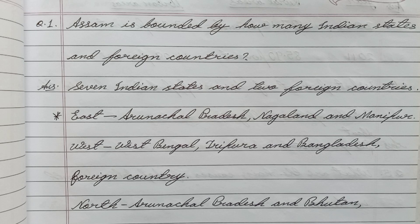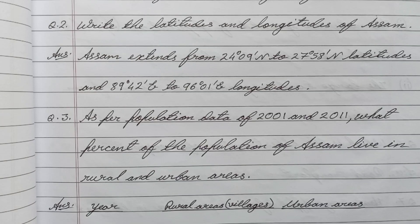Question number one: Assam is bounded by how many Indian states and foreign countries? Answer: Seven Indian states and two foreign countries.